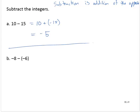Negative 8 subtract negative 6. Subtraction is addition of the opposite. Negative 8 add the opposite of negative 6, which is 6.